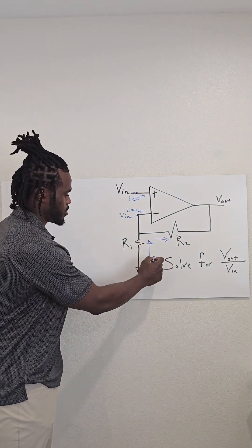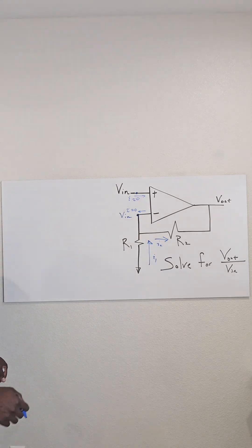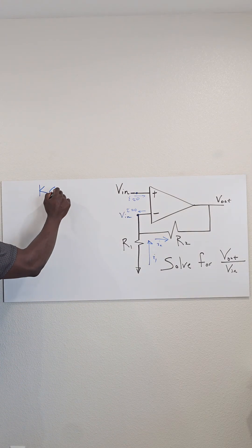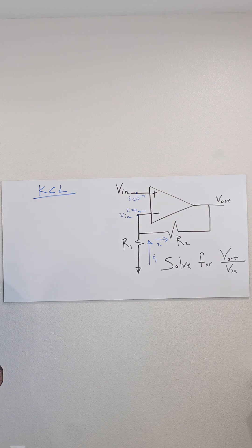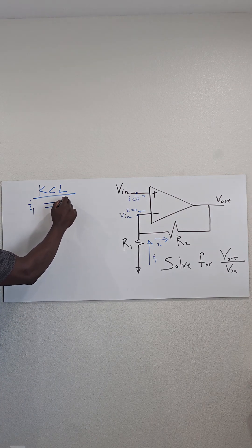Let me call this I1, and let me call this I2. Okay, so using KCL, what can we say? We can say that I1 has to equal I2.